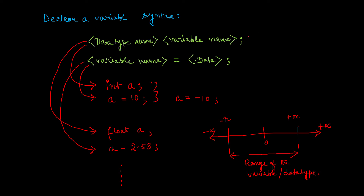Last day we ended our discussion where we saw how to declare a variable and what the basic syntax of declaring a variable is, as well as initializing a variable with a value. These two are basically examples of variable declaration and initialization. We realized that the value we insert in a variable is ultimately stored in some memory location.